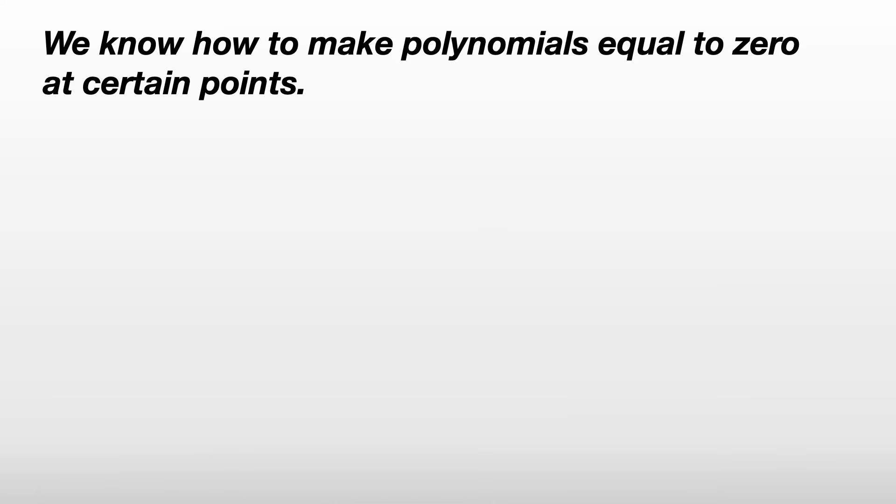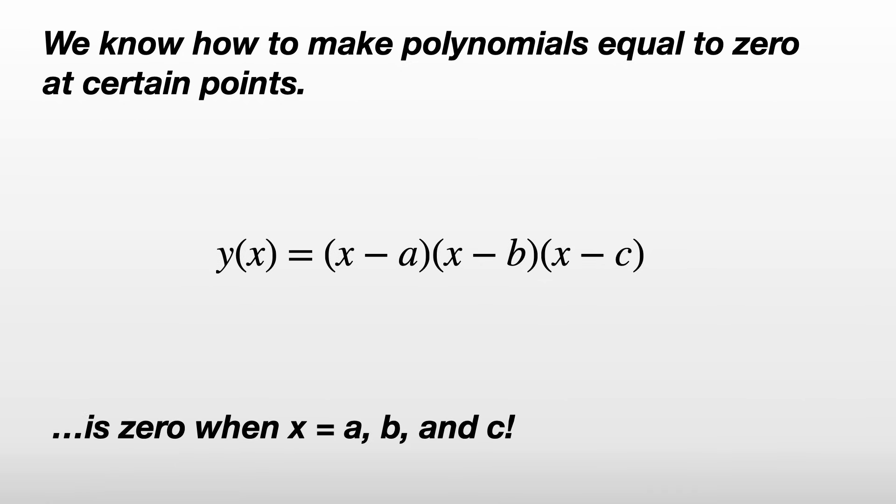The easy bit is finding a polynomial equal to 0 at the points we want it to be. Consider the polynomial y(x) equals (x - a)(x - b)(x - c). We know this is 0 when x is a, b, or c. So let's use this idea to make our polynomial 0 at the nodes.